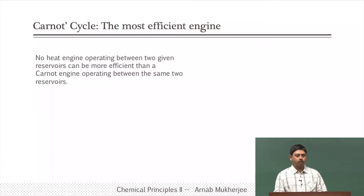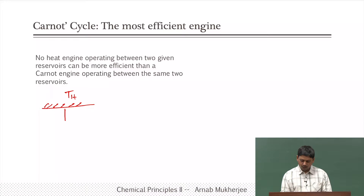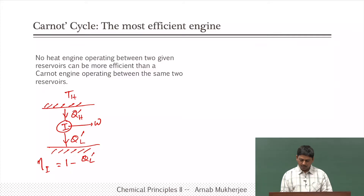So that is what we are going to discuss today. All real engines are irreversible engines. Let us take an example of an irreversible engine and a Carnot engine. We have a high temperature reservoir from which heat QH prime is taken, and QL prime is ejected to the low temperature reservoir. This is an irreversible engine, indicated by I, with work output W. So the efficiency eta_I equals 1 minus QL prime by QH prime.